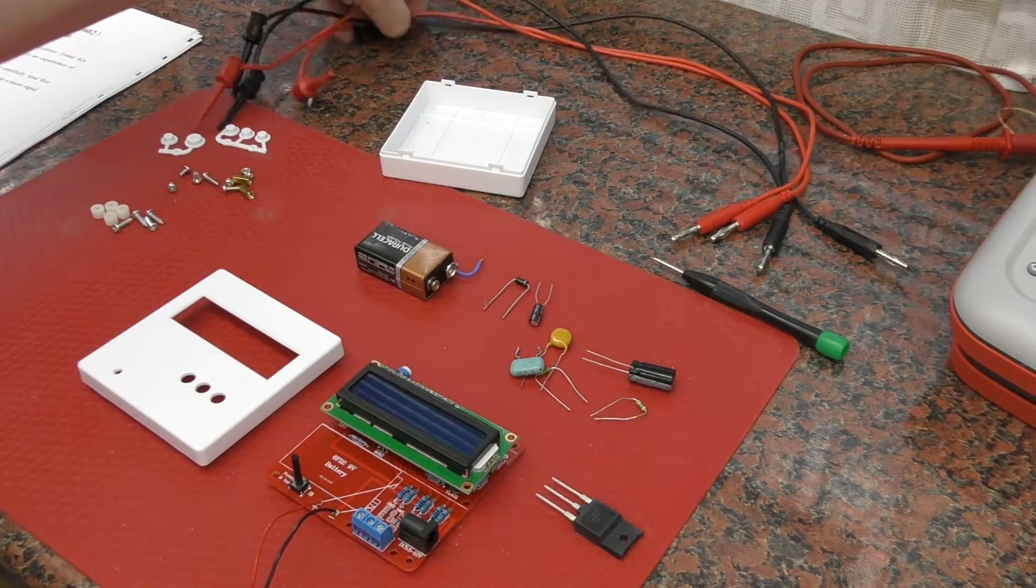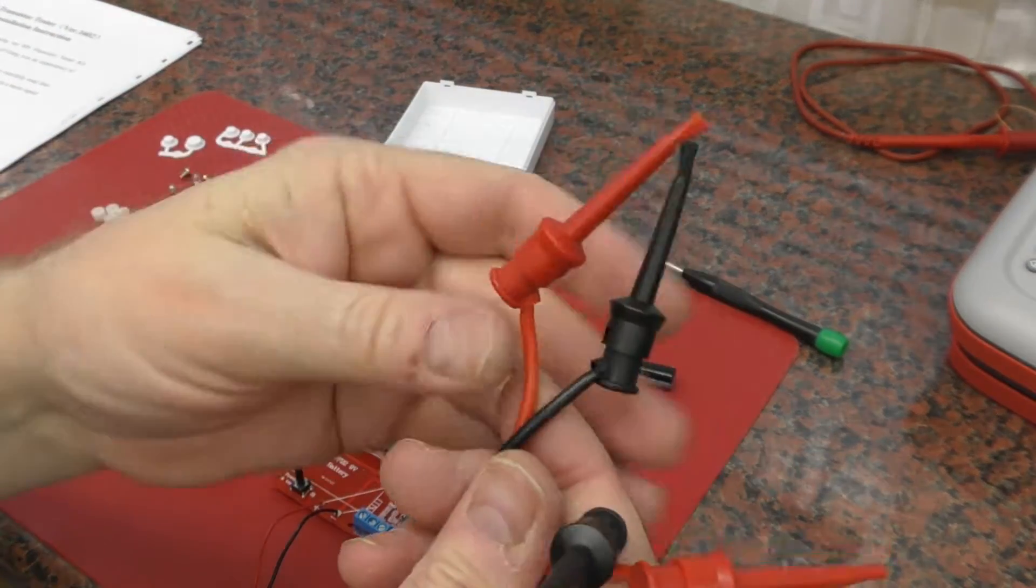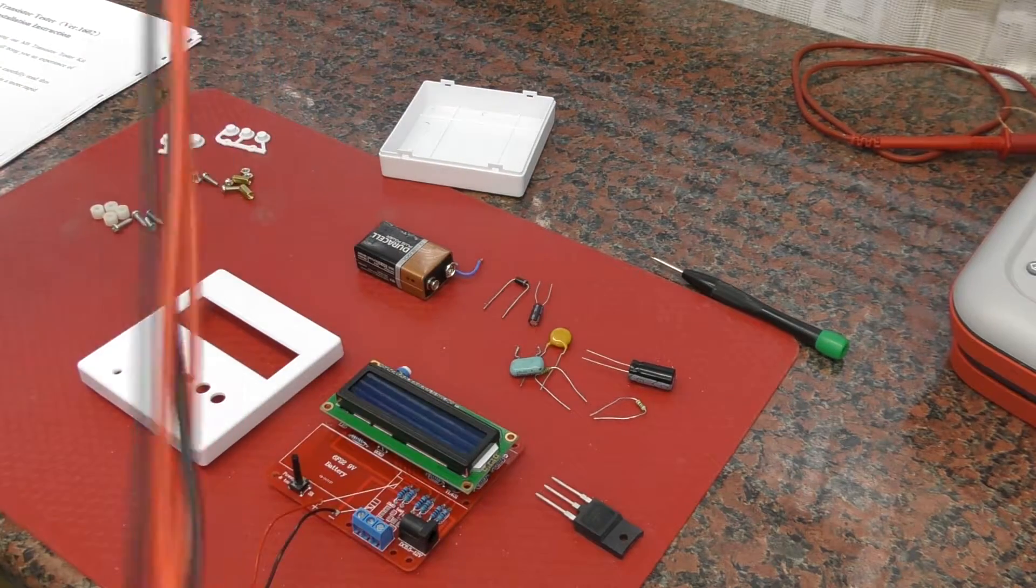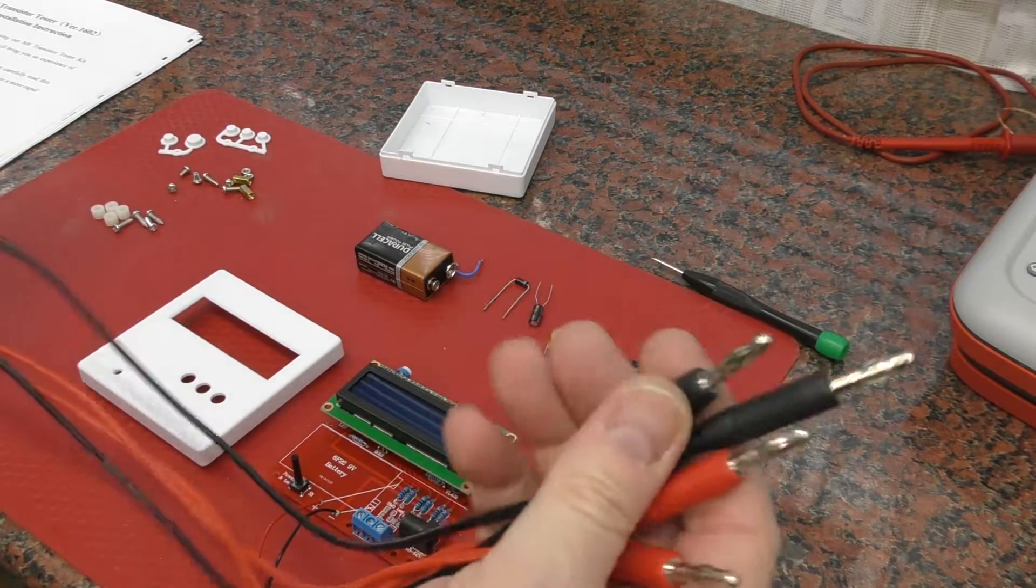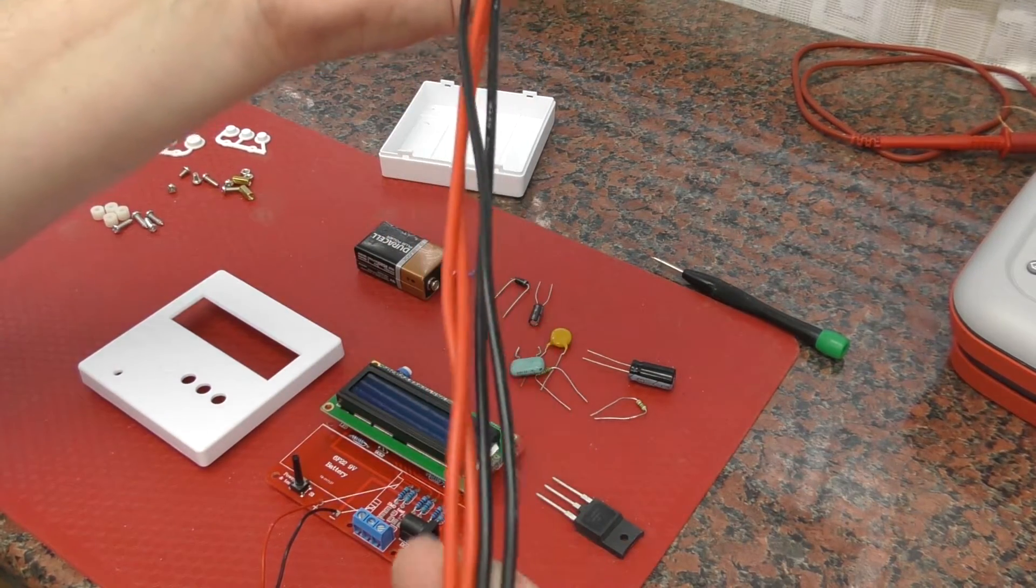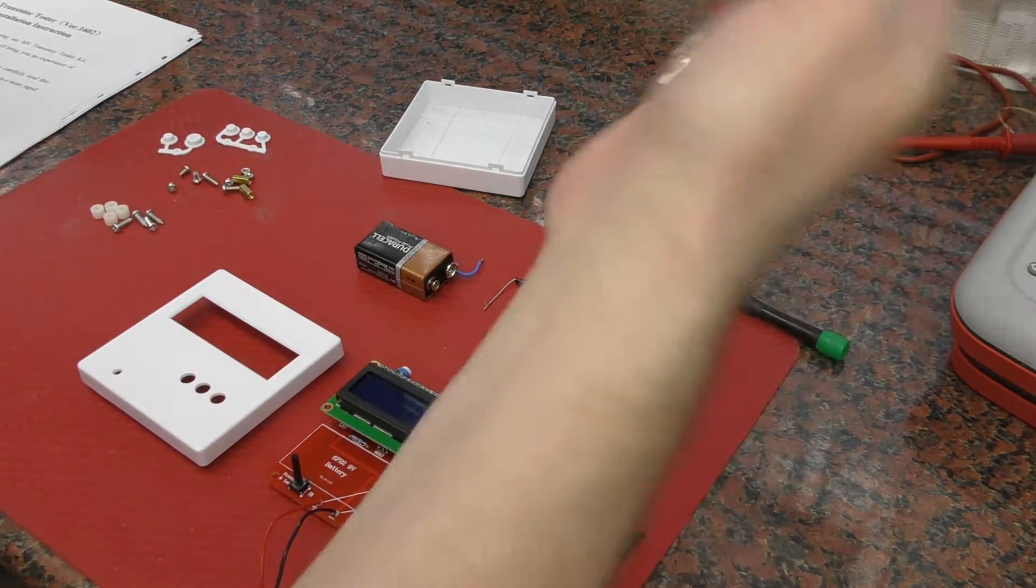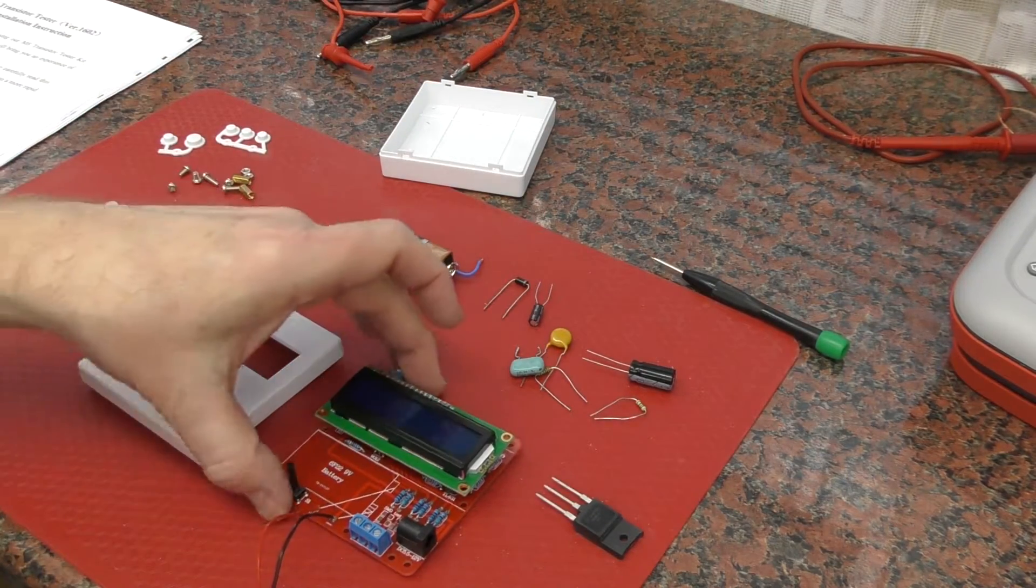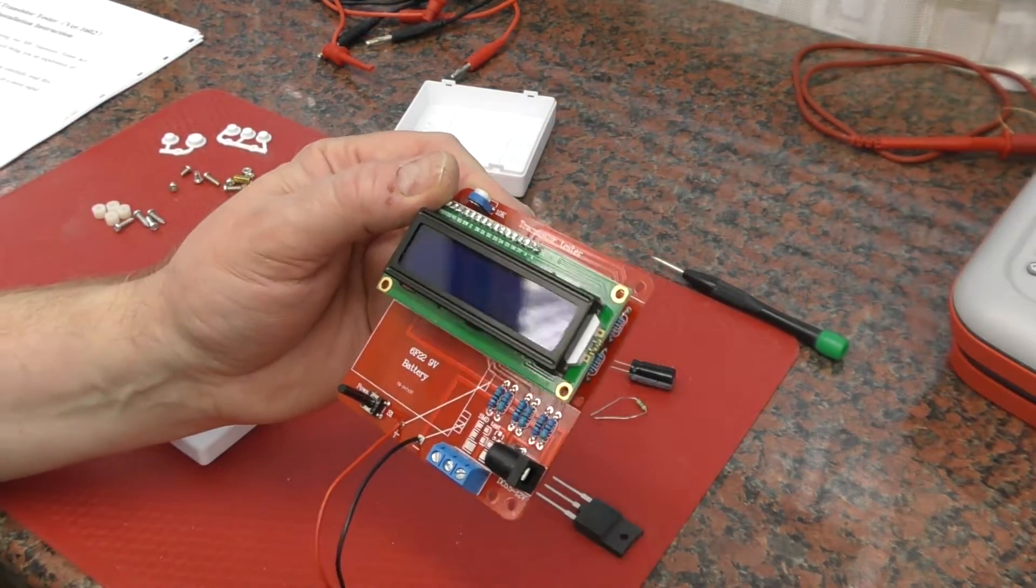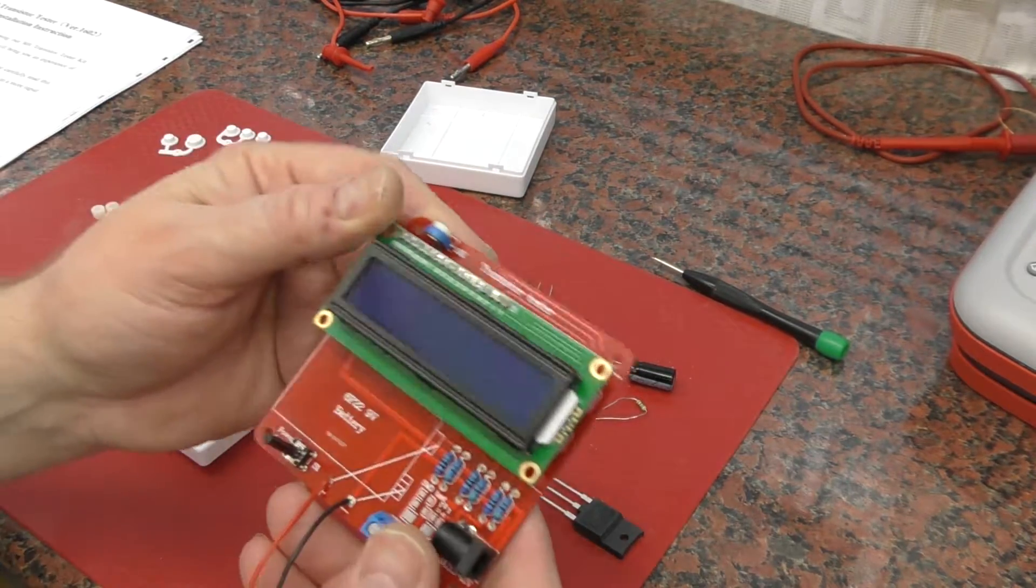What I've done is gone on to Amazon and bought a pack of two of these little test probes. They've got banana plugs at the end. I'm just going to cut these down so they're a little bit shorter. I'll just use three of them - obviously I've got four there, it's a pack of two - and I'll just connect them to here and then recalibrate to allow for the lead length, the resistance and capacitance, etc.